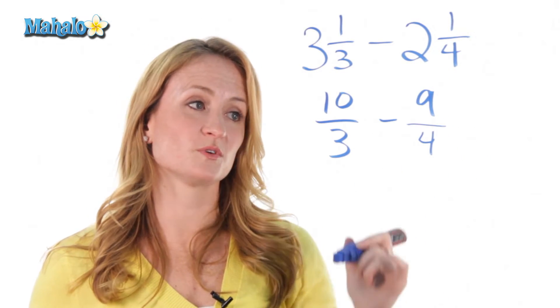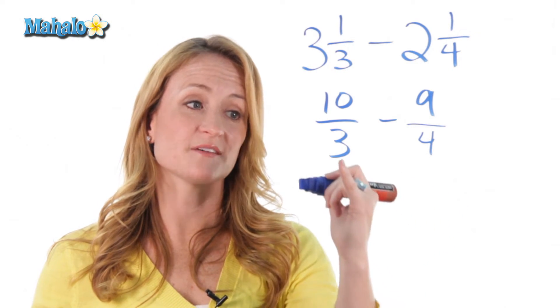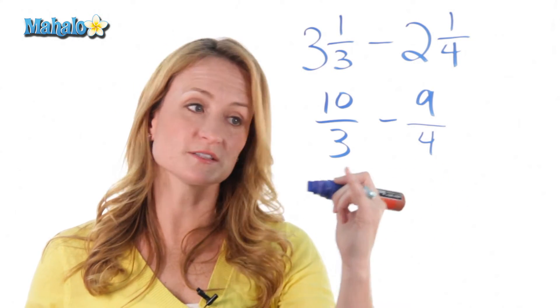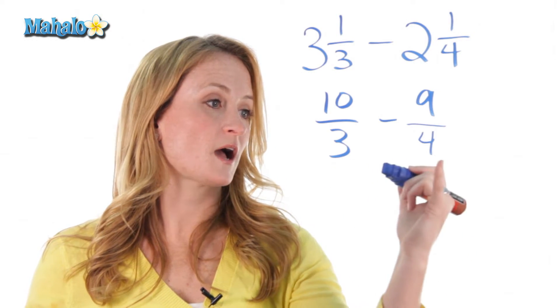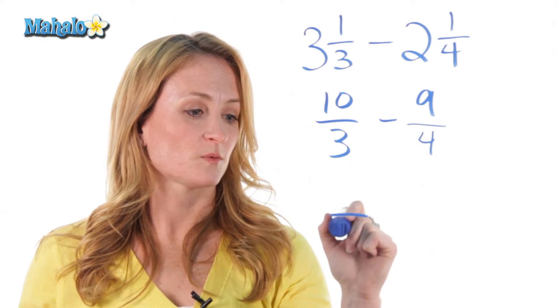We also know that the rules of adding or subtracting fractions is you have to have the exact same denominator. These aren't the exact same, so we need to get what's called a common denominator. So, how do they become common? If they were 12.